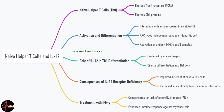Th1 cells produce interferon-gamma or IFN-γ, which activates macrophages and enhances the CD8+ cytotoxic response. This is essential for attacking cells that harbor these intracellular pathogens.